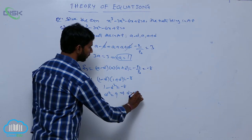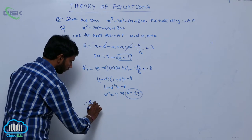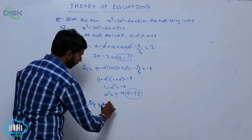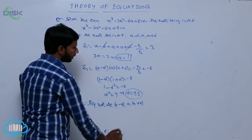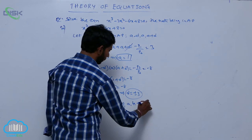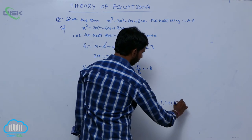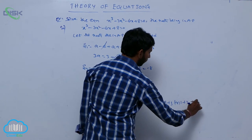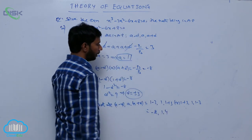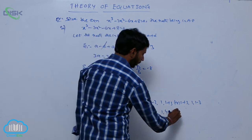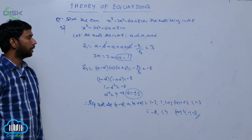Then D square is equal to 9, and D is equal to plus or minus 3. Therefore, the required roots are A minus D, A, A plus D. With A equal to 1 and D equal to 3: 1 minus 3, 1, 1 plus 3, or 1 plus 3, 1, 1 minus 3. That gives minus 2, 1, 4 or 4, 1, minus 2 as the roots of the equation with roots in AP.